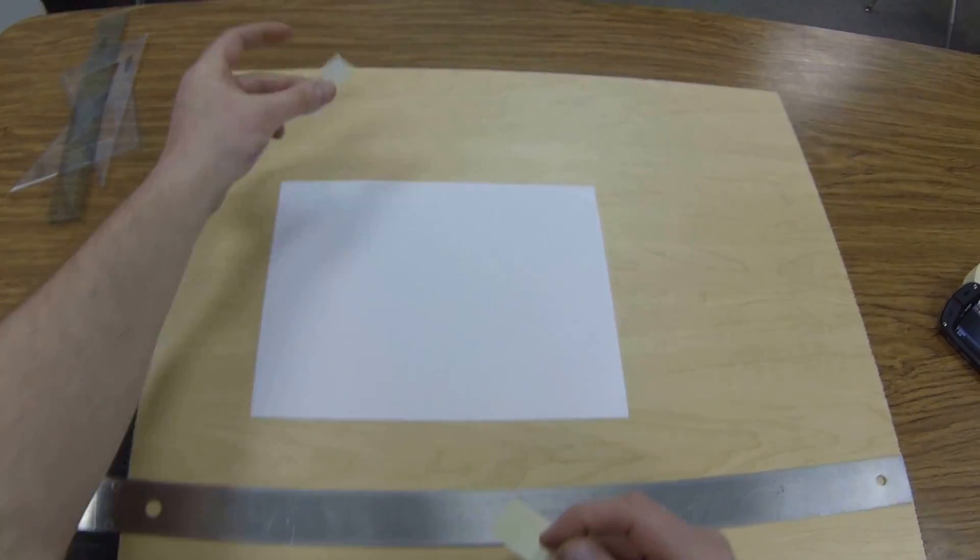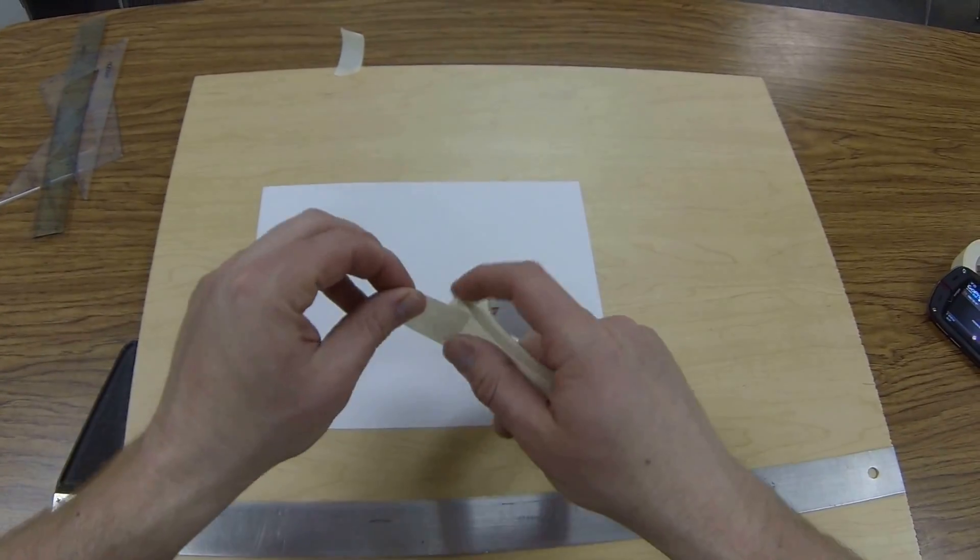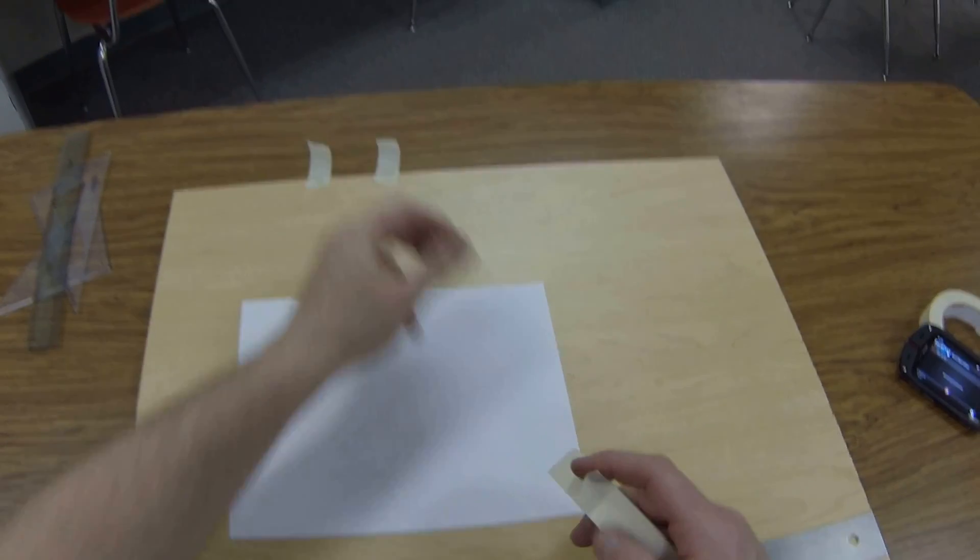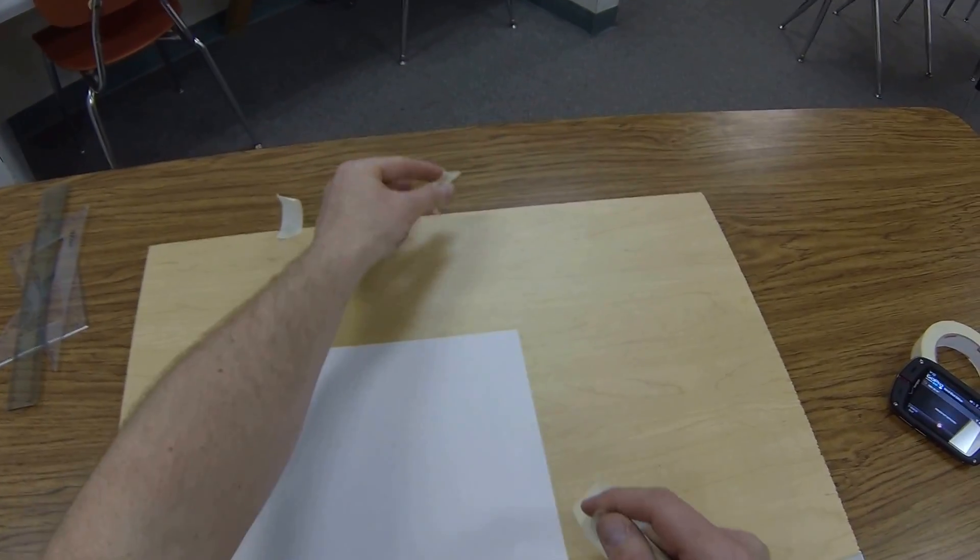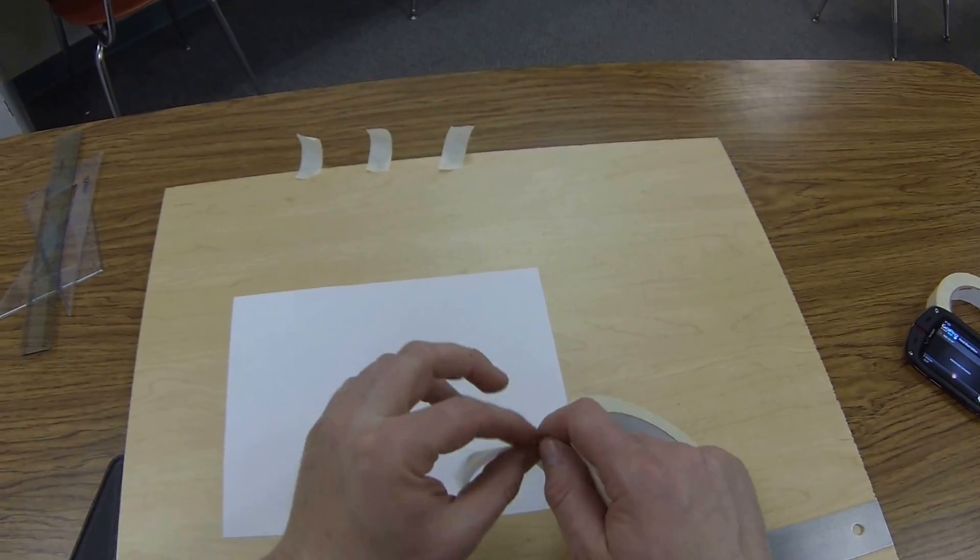We're going to peel off chunks about an inch and a half to two inches long. We're going to put those across the top of my drafting board here, so they'll come into play in just a little bit.